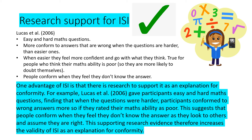Below is how I've typed it up: one advantage of informational social influence is there is research to support it as an explanation for conformity. For example, Lucas et al gave participants easy and hard maths questions, finding that when questions were harder, participants conformed to wrong answers more so if they rated their maths ability as poor. This suggests that people conform when they feel they don't know the answer as they look to others and assume they are right, therefore increasing the validity of informational social influence as an explanation for conformity.